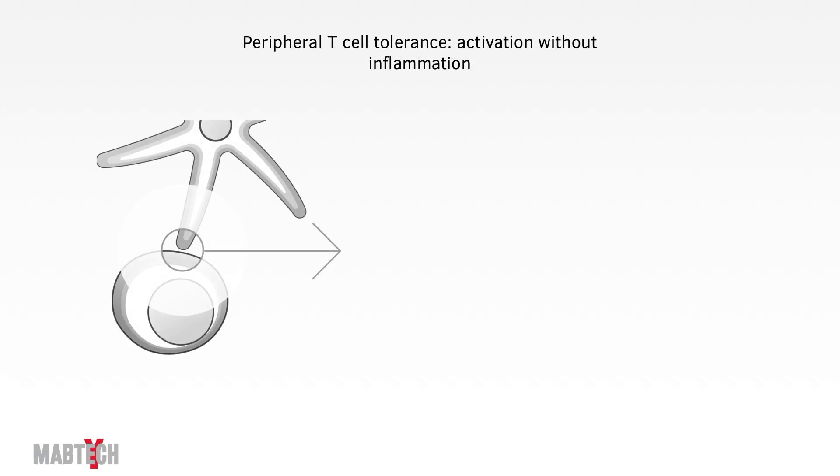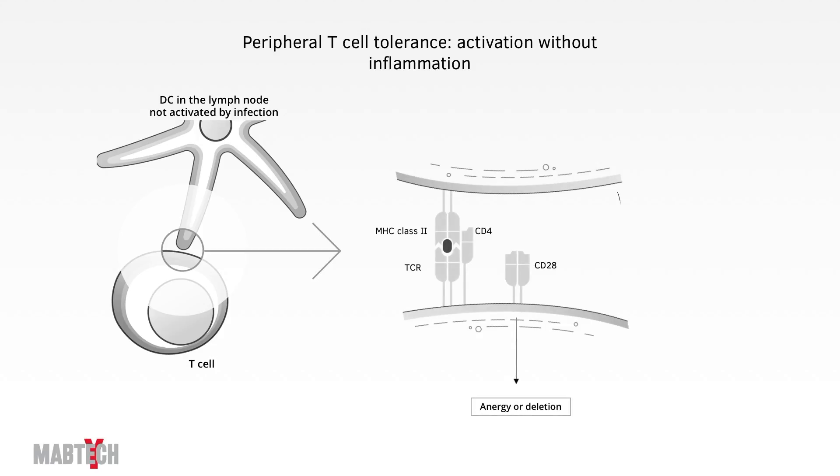The selection in the thymus is not 100% perfect, which is why there are ways to stop autoreactive cells also in peripheral lymphoid organs. Peripheral T cell tolerance is induced when T cells are activated without the presence of any inflammation. Since dendritic cells constitutively produce TGF-beta, the potentially autoreactive T cells might instead become a regulatory T cell specific for the self-antigen.